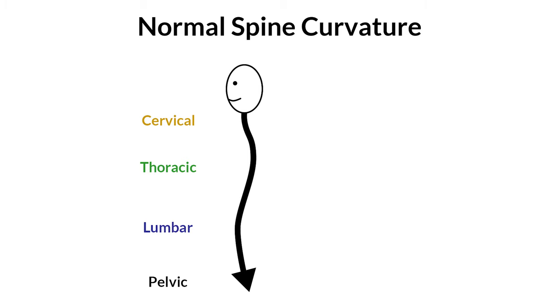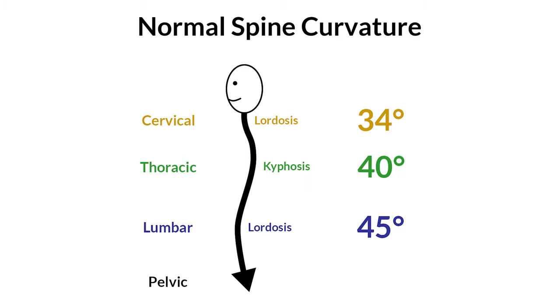The coccyx and sacrum fuse as we develop into a human, so we usually only discuss the top three segments: lumbar, thoracic, and cervical. Normal spine curvature in standing is 45 degrees of lumbar lordosis, 40 degrees of thoracic kyphosis, and 34 degrees of cervical lordosis.